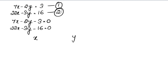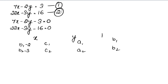Now we have one variable. We identify B1, B2, C1, C2, A1, A2. What are B1 and B2? Those are the coefficients of y, so minus 2 and minus 3 — both places. And the A coefficients are 7 and 22. And the C coefficients are minus 3 and minus 16.